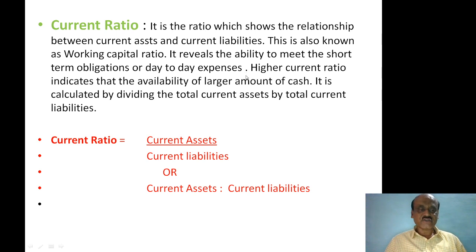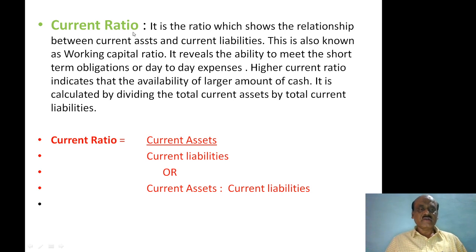A higher current ratio indicates the availability of a larger amount of cash. The current ratio is the ratio of current assets to current liabilities, showing the relationship between the two.